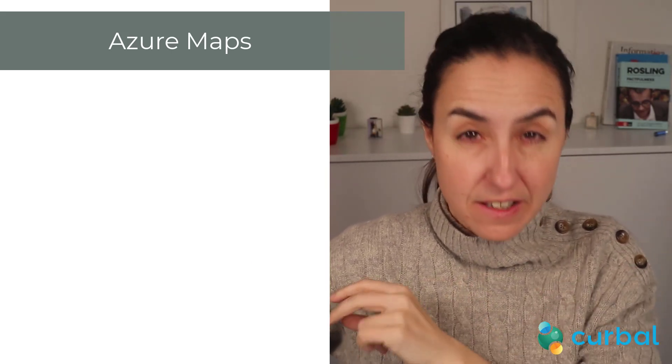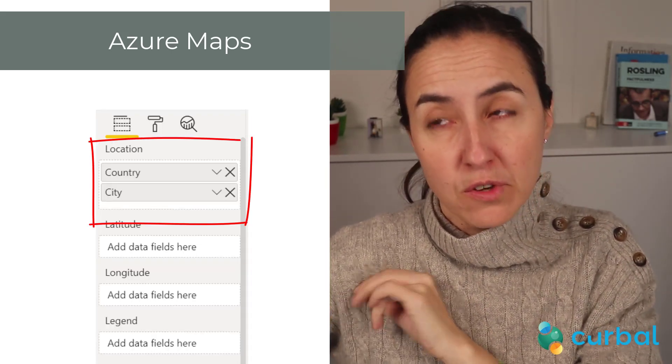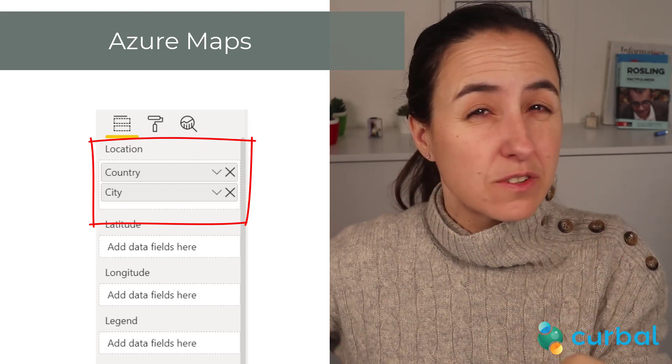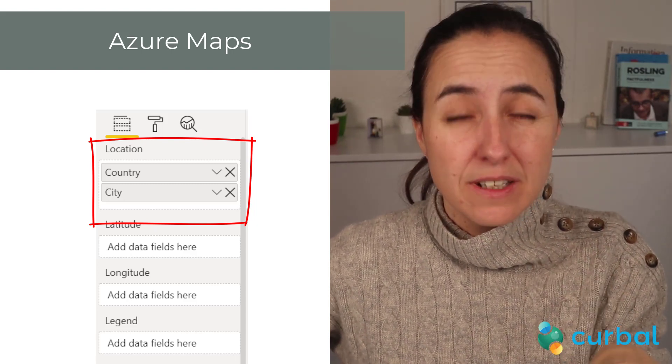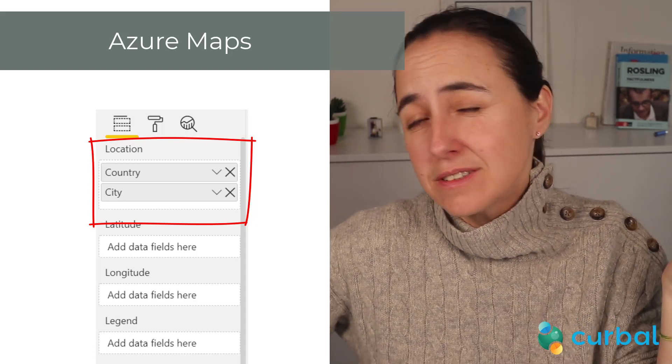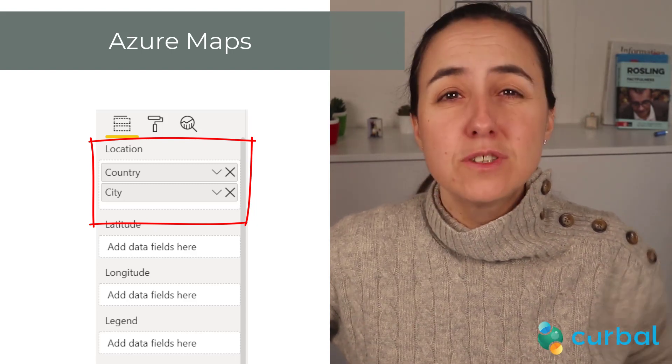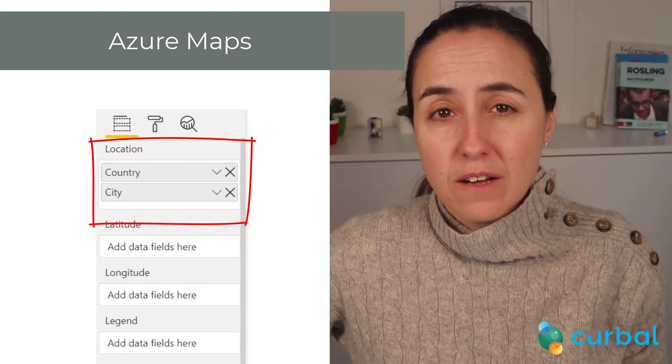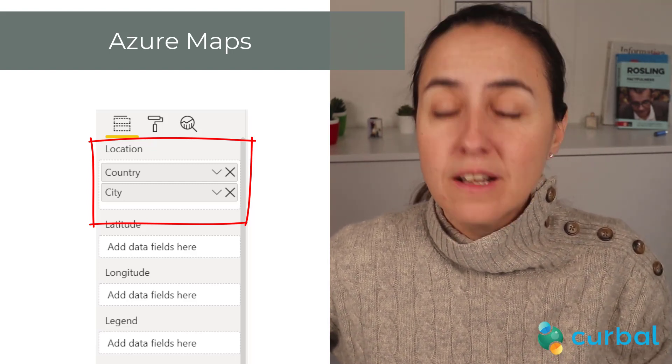Now the most controversial update this month: choropleth maps — or short maps. There is actually a very good update: it now has a location field. Before, you had to have latitude and longitude in order to use it, and for most business use cases you don't, so it was a mess. Now you can just use a location field, which is very useful.